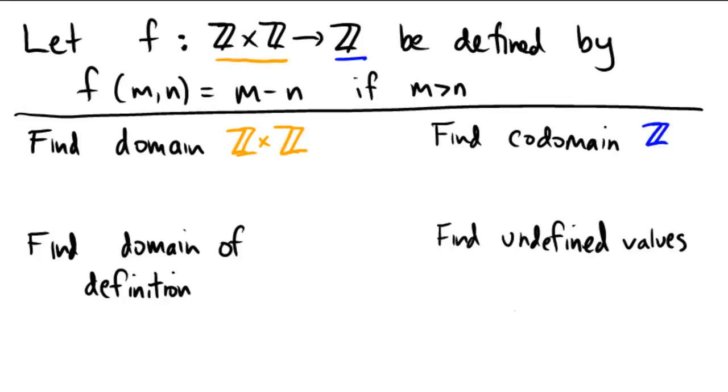Now, the domain of definition. The domain of definition is going to be a subset of your domain. So it's going to be the set of (m,n) coming from Z×Z, because it's going to be a subset of Z×Z.